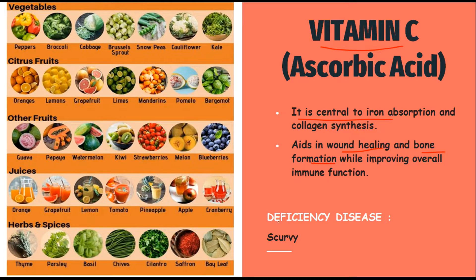The deficiency disease caused due to lack of vitamin C is scurvy. Some food examples include peppers, broccoli, cabbage, and other vegetables. Citrus fruits are the main source of vitamin C. Other fruits include guava, papaya, watermelon, kiwi, strawberries, melon, and blueberries. Some juices like grapefruit, lemon, and tomato also contain vitamin C, as do some herbs and spices.